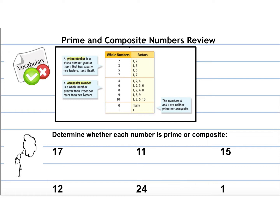So just some examples to go through. You can just list the number and write down if it's prime or composite. So 17 — its only factors are 1 and 17, so that makes it a prime number. 11 — again, 1 and 11 are the only factors, so it would be prime. For 15, the factors are 1, 3, 5, and 15, so therefore it's composite.